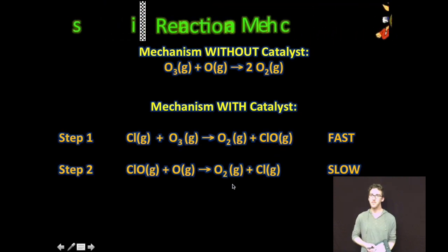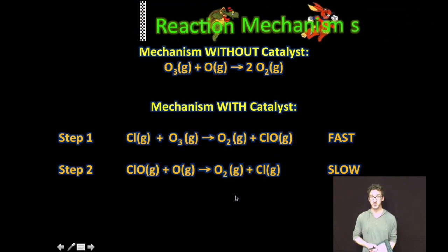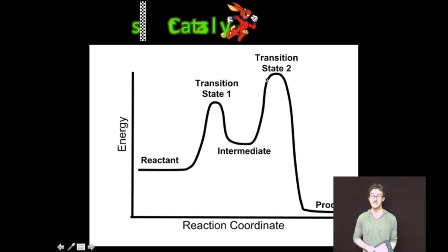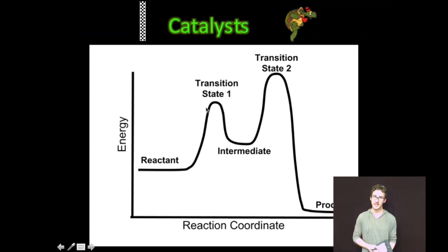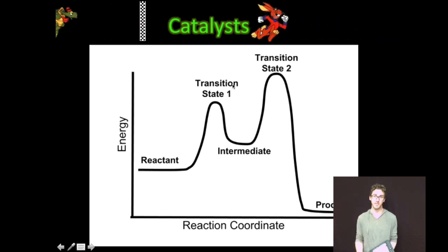The slow step will have the hump with the higher activation energy. So again, as I come back to my mechanism to describe the decomposition of ozone, and I think about depicting this in an energy profile, recognize that the second hump or the slow hump will have the higher activation energy. It doesn't always have to be the second hump that's higher. It could be the first hump. Again, it just depends on which step is the slow step.